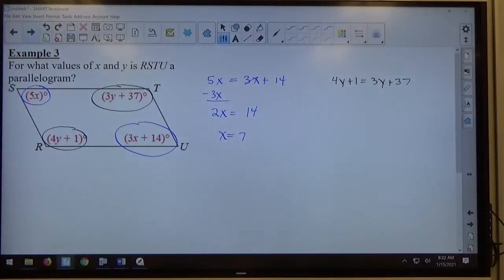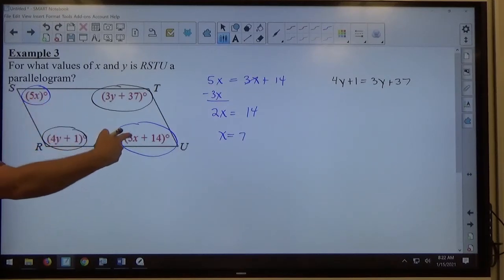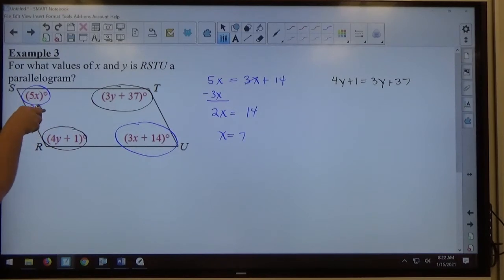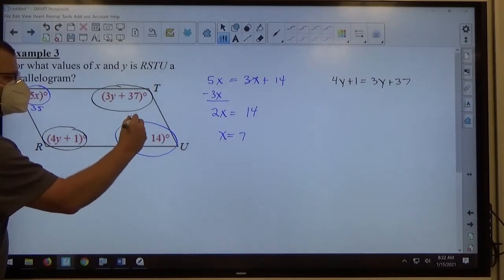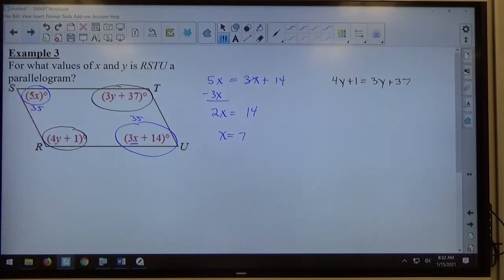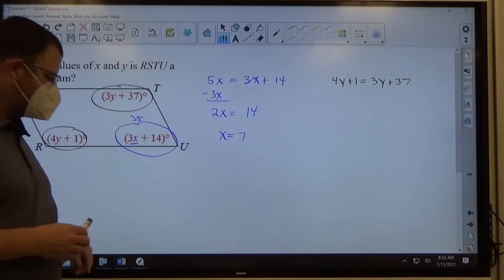Again, just a quick check to verify that actually is the right answer, these should be the same amount if that's right, so 5 times 7 is 35. And 21, that's 3 times 7, 21 plus 14 is 35. So those are congruent when x equals 7.